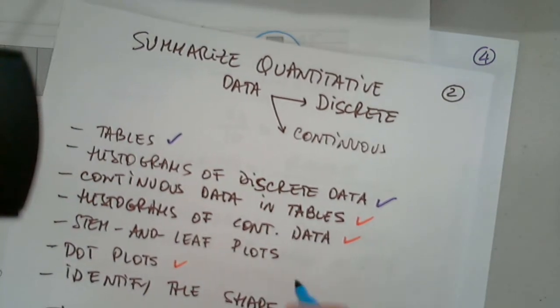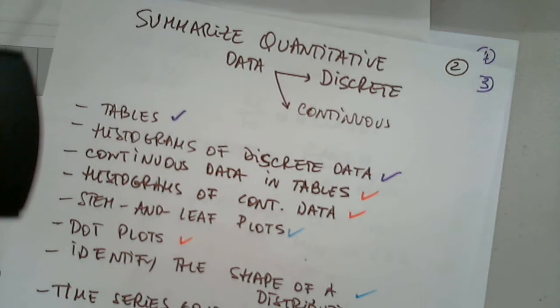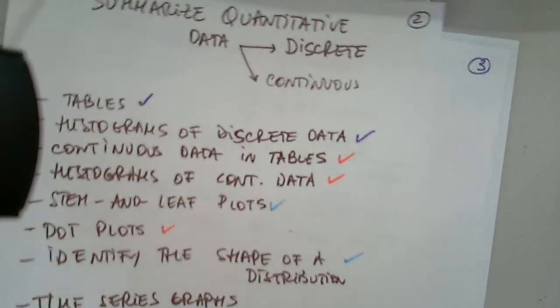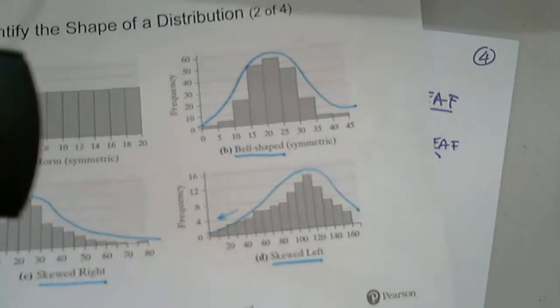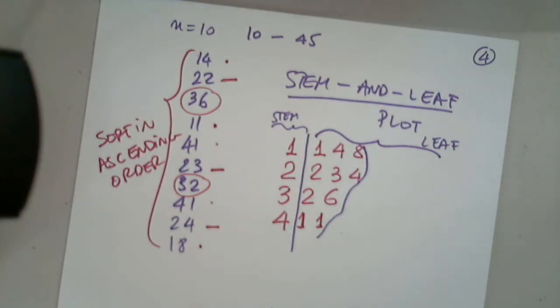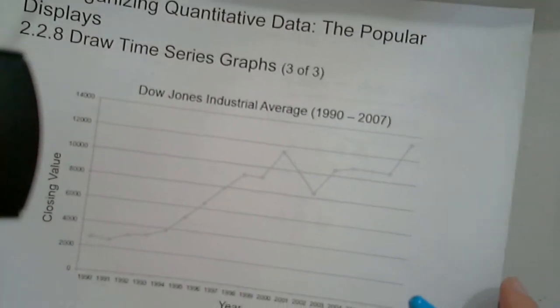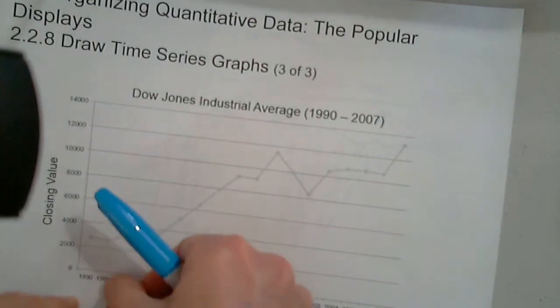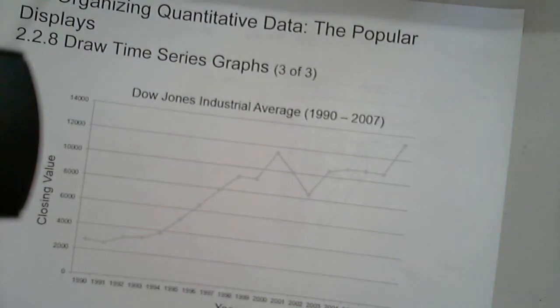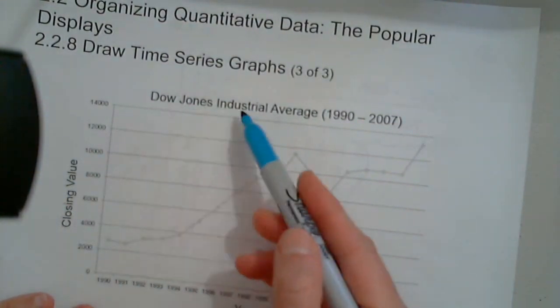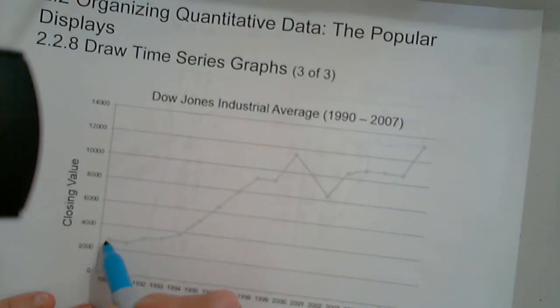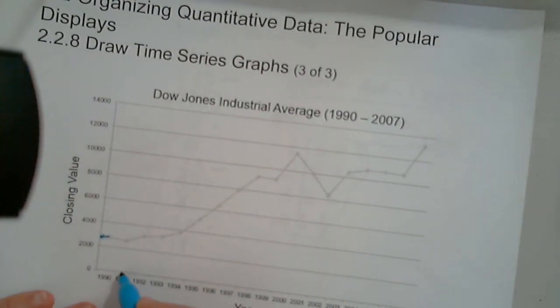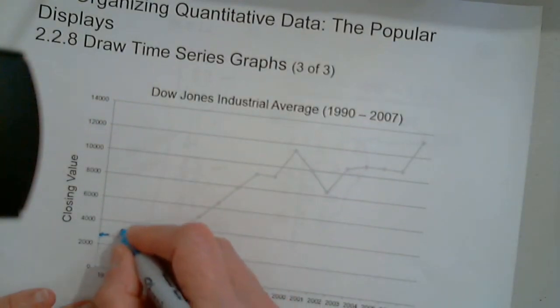So we looked at the stem and leaf plot and identify the distributions. And since we're here, I'm just going to show that and then we can go ahead and work on. So this is what the time series is. It's based on time. Between 1990 and 2007. So in 1990, I read whatever Dow Jones industrial average, the closing value, I read it right here. In the middle of 1991, I read it here. In the middle of 1992, I read it here.